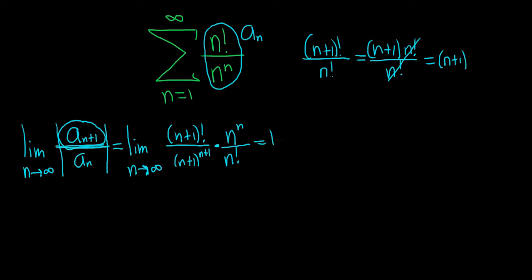So this is equal to the limit as n approaches infinity. So we have n plus 1. Then we have n to the n over n plus 1 to the n plus 1. Ah, I see something else that can simplify now. So this n plus 1 is being divided by n plus 1 to the n plus 1.